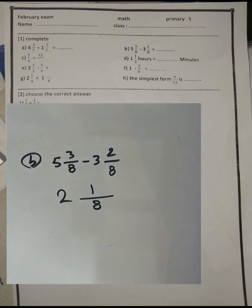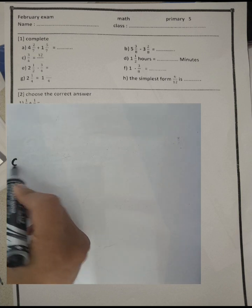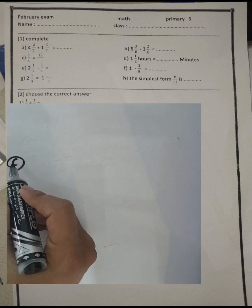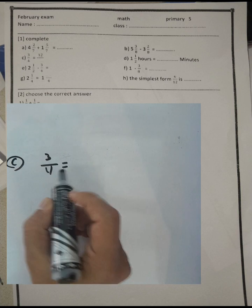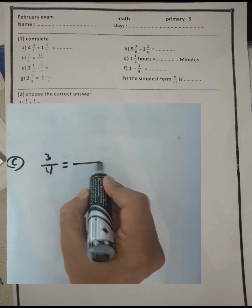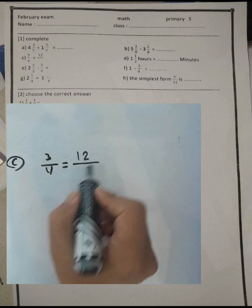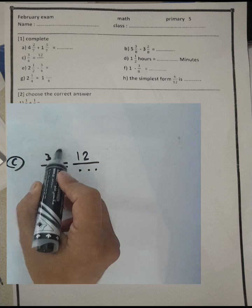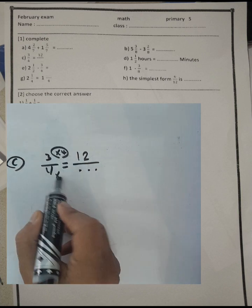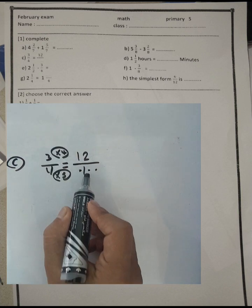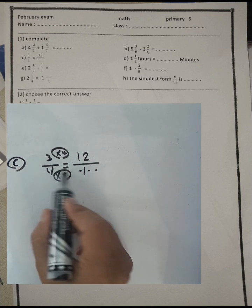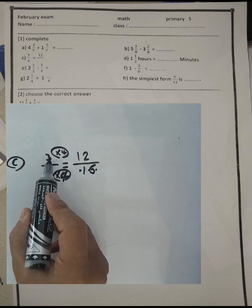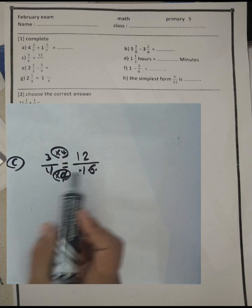Letter C: three fourths is equivalent to twelve over what? We know three times four equals twelve, so four times four equals sixteen. We must write sixteen in the denominator. So three over four equals twelve over sixteen.